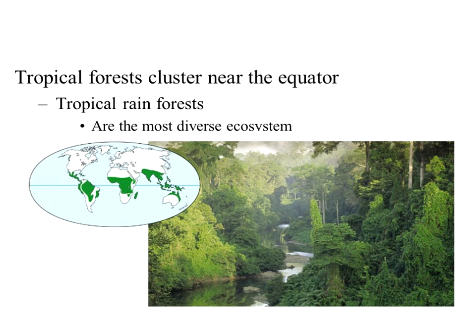So now we're going to go through the different terrestrial biomes, followed by the aquatic biomes. Tropical forests cluster near the equator. I'm using a set of slides from another textbook just to illustrate how the distribution of tropical forests can show on the world map, but just the tropical forests alone.